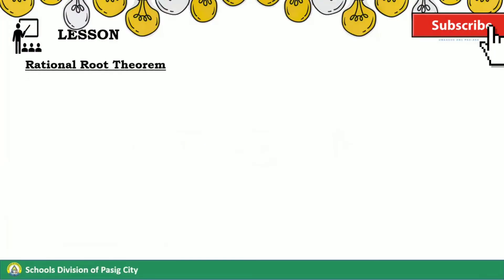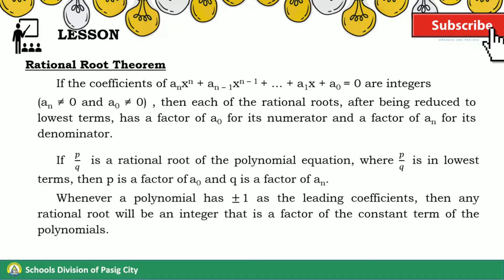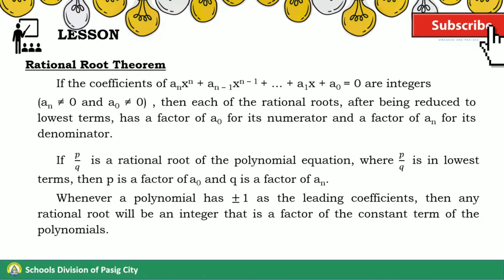The Rational Root Theorem will have a big part in our lesson for today. Let us recall: the Rational Root Theorem states that if the coefficients of the polynomial equation are integers, then each of the rational roots, after being reduced to lowest terms, has a factor of the constant for its numerator and a factor of the leading coefficient for its denominator. If p over q is a rational root where p over q is in lowest terms, then p is a factor of the constant and q is a factor of the leading coefficient. Whenever a polynomial has ±1 as the leading coefficient, any rational root will be an integer that is a factor of the constant term.